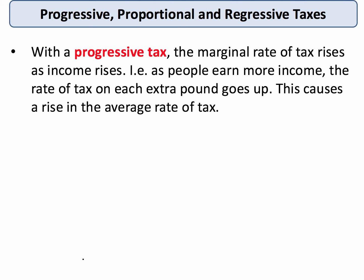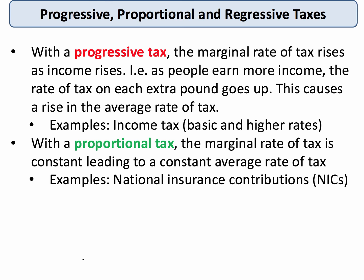First of all, we need some definitions. With a progressive tax, the marginal rate of tax goes up as your income increases. So as my income rises each year, I might move on to a higher tax band, and the rate of tax on each extra pound might go up. When the marginal rate of tax increases — let's say from 20% to 40%, or perhaps to 45% — this causes the average rate of tax also to go up. Good examples include income tax.